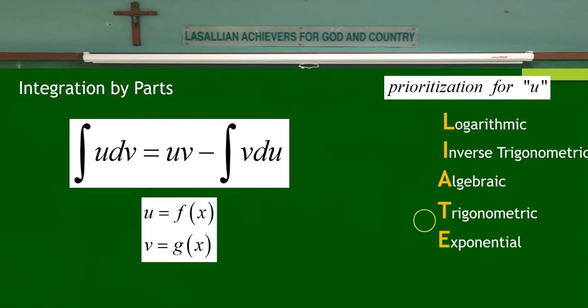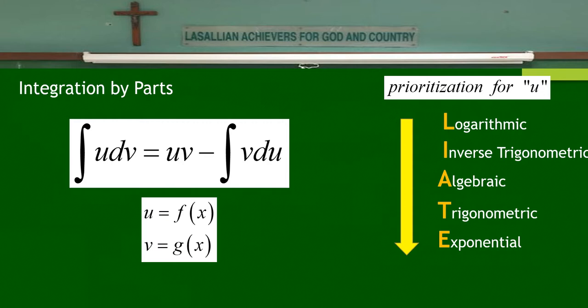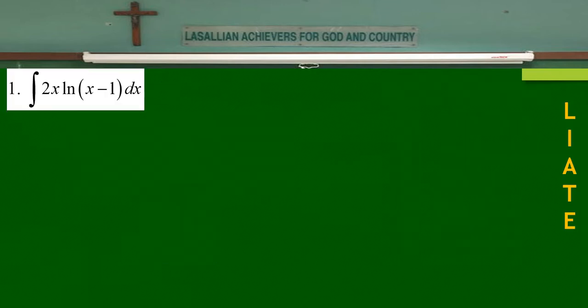The five functions in priority order are: Logarithmic, Inverse trigonometric, Algebraic, Trigonometric, and Exponential. Prioritization starts from logarithmic downwards. For example, if you have a combination of logarithmic and algebraic, your u would be the logarithmic. If you have algebraic and exponential, let u be the algebraic and dv be the exponential.